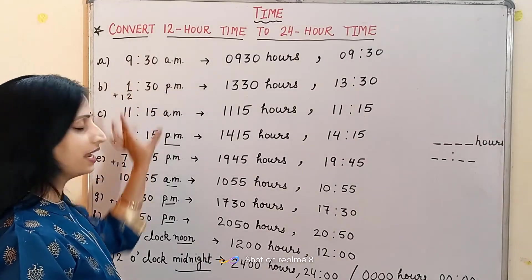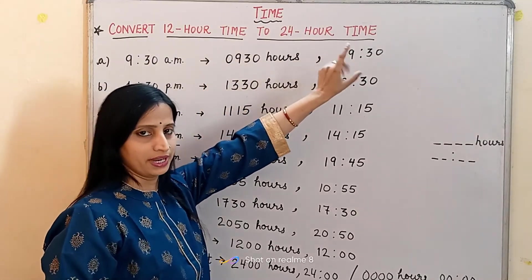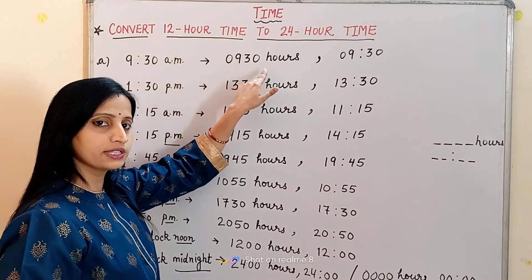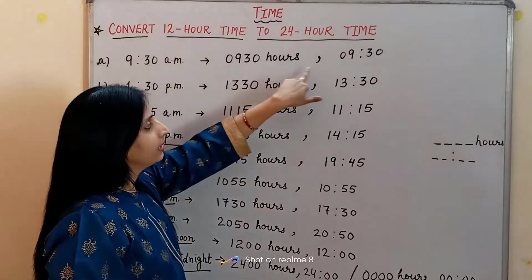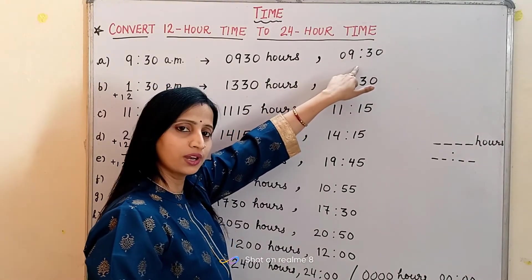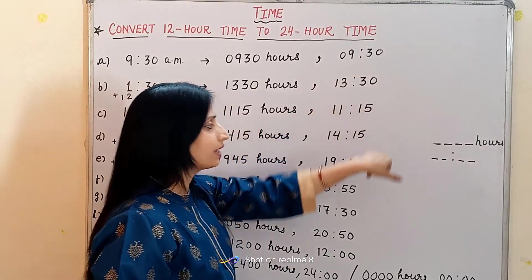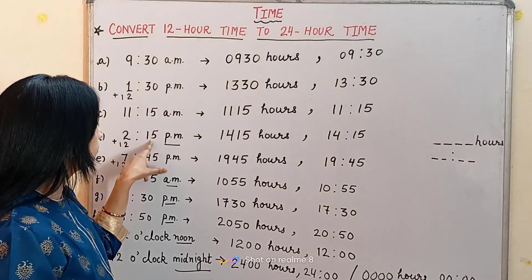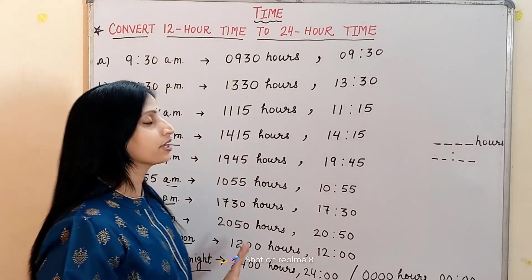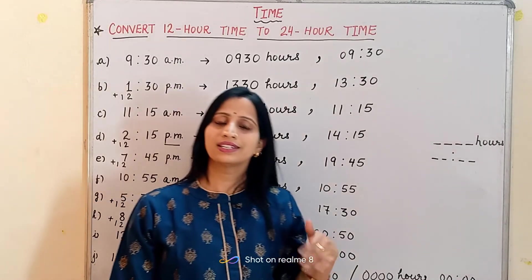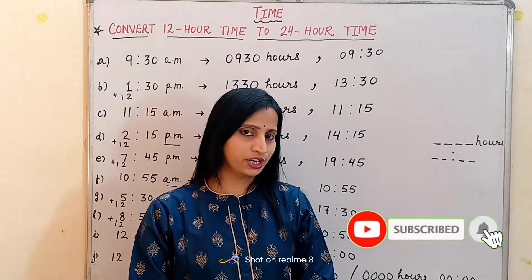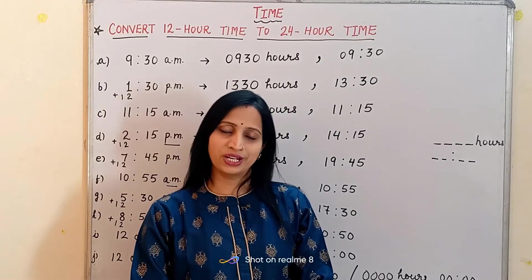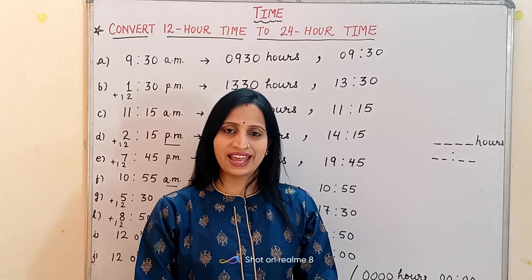So that was all about how to convert time from AM/PM to 24-hour format. Always remember two things: write the time using 4 digits with 'hours' at the end, or write the hours before the colon and the minutes after the colon — no AM or PM. And whenever there is PM, add 12 to the hours; minutes remain as they are. I hope you understood this concept. If you like this video please share it, subscribe to my channel for more videos, and press the bell icon for notifications. See you in the next video — goodbye and take care!